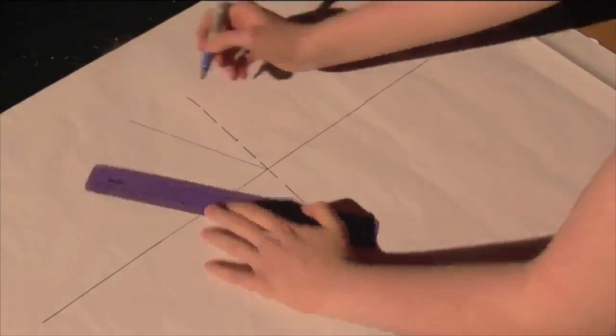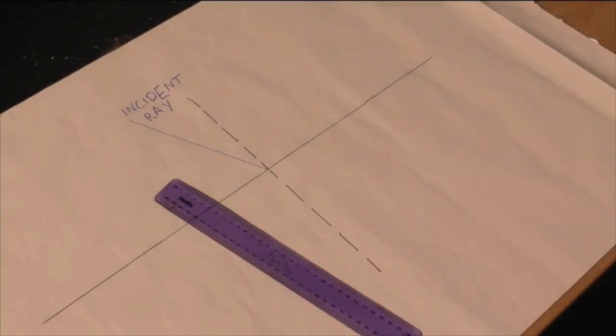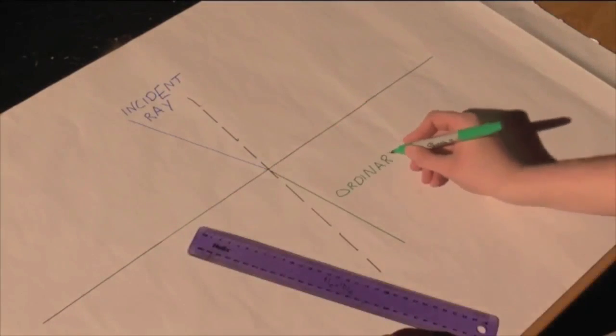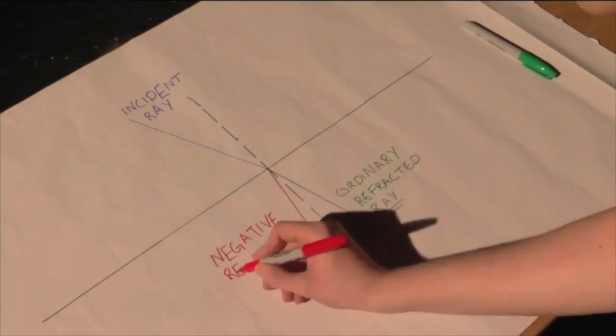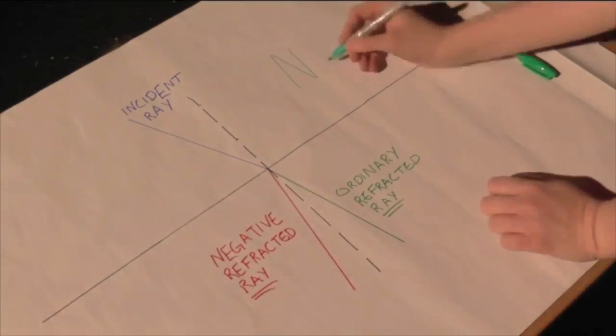As you may already know, light changes speed and direction when entering a material with a new refractive index. This can be seen clearly in prisms, where the air glass interface can distort and magnify images according to difference in refractive indices.